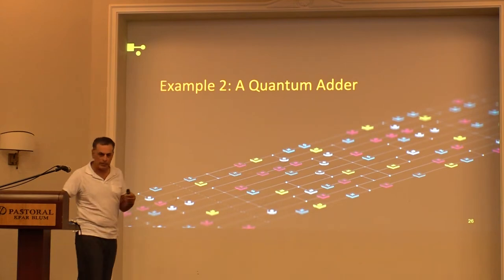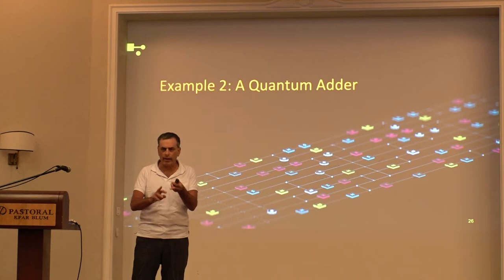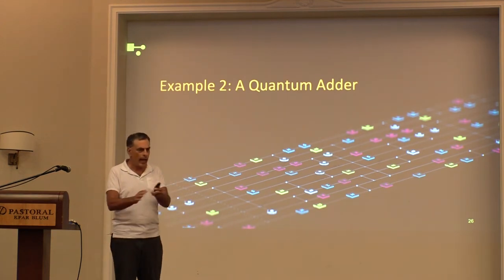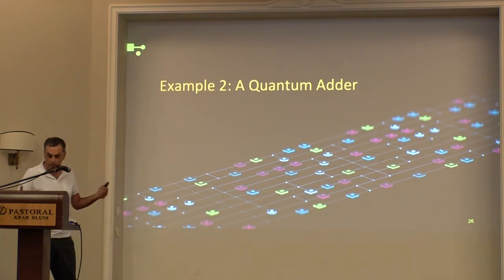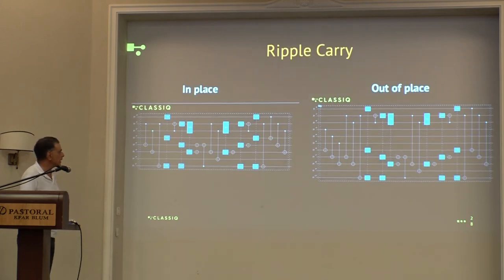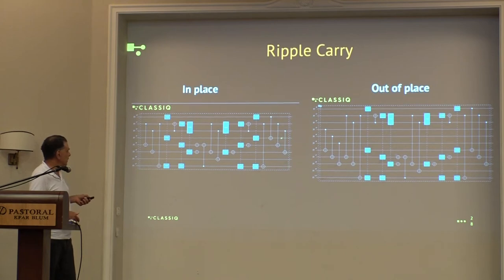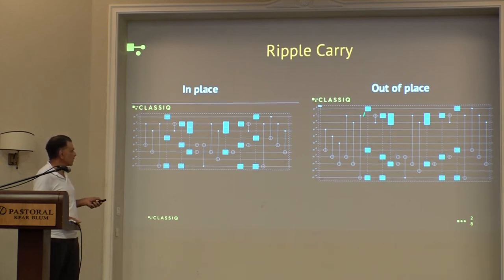Another example: quantum arithmetic — it appears in modular exponentiation, in Grover, in HHL, in the implementation of linear equations. A three-bit addition: two input registers of size three qubits each. Usually people use a ripple carry — a quantum version of it. But you can get the result in-place, replacing one of the inputs, or you can get the result out-of-place. Depending on whether you are limited in qubits, or you can push the result out-of-place without uncomputation — and uncomputation is expensive.